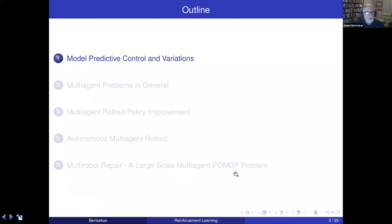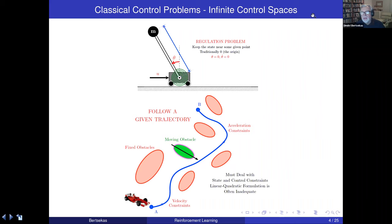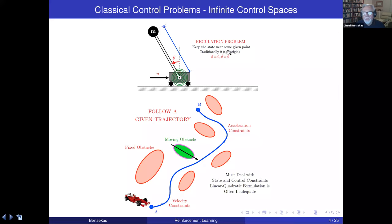Model predictive control's principal area of application is in control system design, particularly for problems that involve infinite control spaces where some of the ideas discussed in connection with deterministic rollout do not apply because the number of Q-factors is infinite. There are two major types of problems: the regulation problem, where you want to keep the state of the system near some given point, traditionally the origin. If the desired point is elsewhere, we make a translation of coordinates so that point becomes the origin.